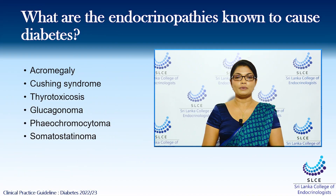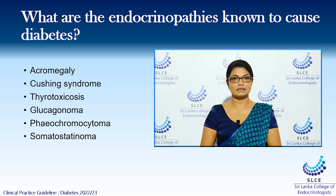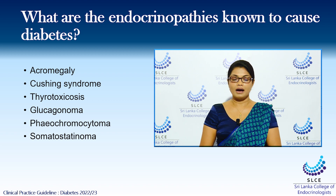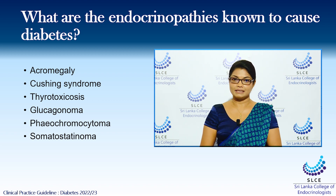Endocrinopathies can also cause diabetes in patients. Although these are rare, it is interesting to know these facts. Patients with acromegaly, Cushing's syndrome, thyrotoxicosis, patients carrying glucagonomas, pheochromocytomas, and somatostatinomas are at a high risk of having diabetes mellitus.